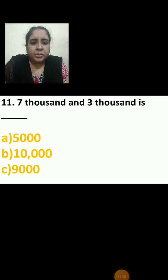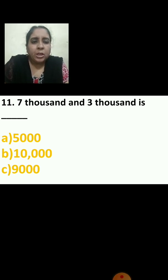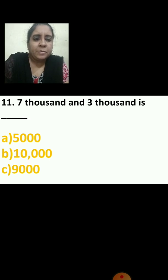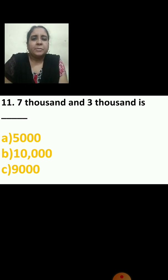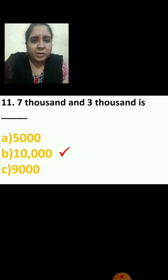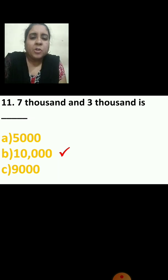Let us do the next question: 7,000 and 3,000 is dash. I am repeating: 7,000 and 3,000 is dash. The options are 5,000; 10,000; or 9,000. Add and find the answer. 7 plus 3 is 10, so your answer is 10,000.